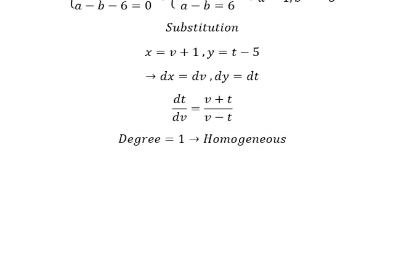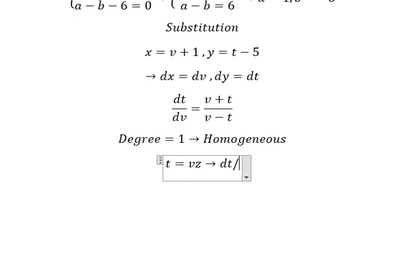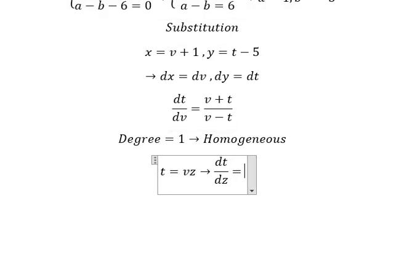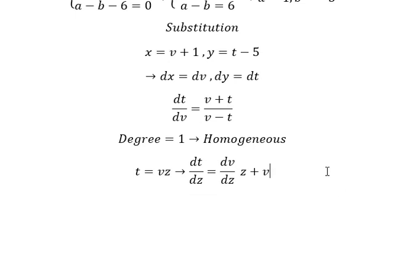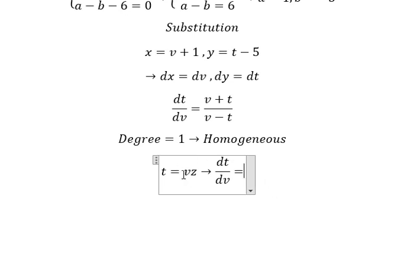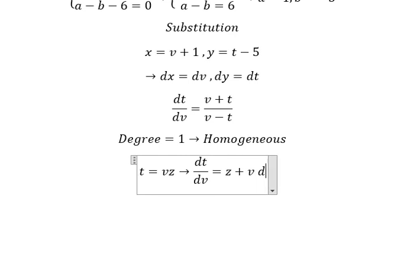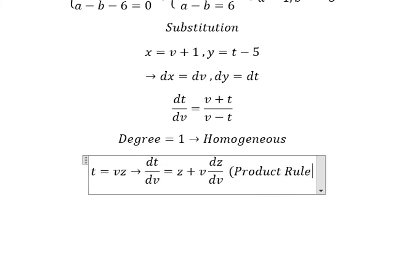Since the equation is homogeneous, I will put t equal to vz. If we do the first derivative of both sides, we get dt over dz. The first derivative of vz requires the product rule: the derivative of v gives z, and then we also get dz over dv multiplied by v. This is the product rule of the derivative.